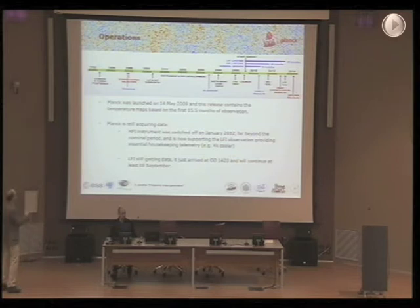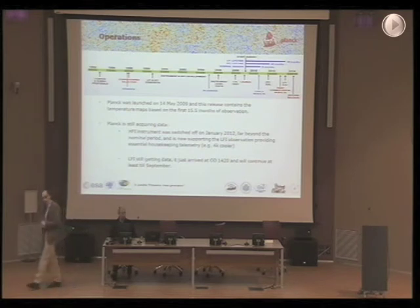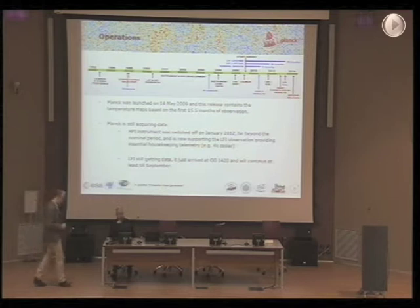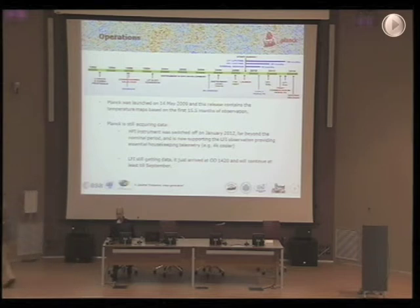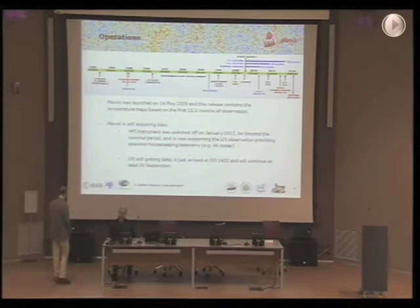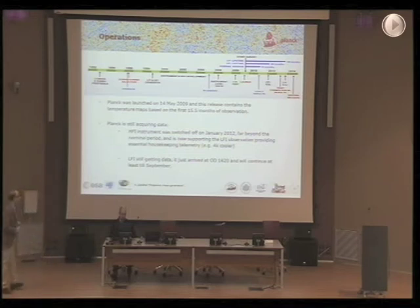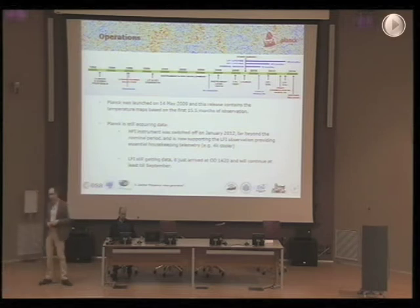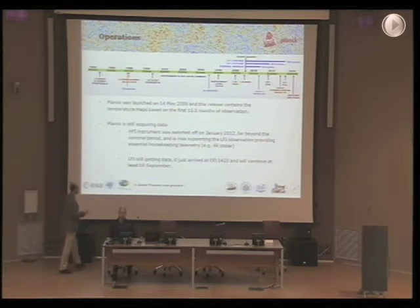The path to make these maps is very long. What we are discussing right now covers only the first 15.5 months of observation. We are still working and still getting the data — this morning I checked what arrived from the satellite and we are at OD 1426. With all five surveys we will continue observing the sky until reaching eight surveys, a big milestone. In the past it was scheduled to observe for only 50 months. HFI reached the end of its nominal period in January 2012 because the consumable helium ran out, but HFI worked far beyond its nominal period.